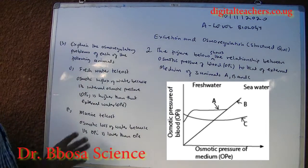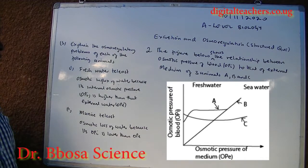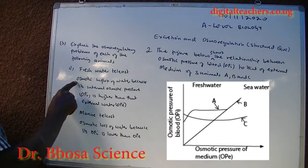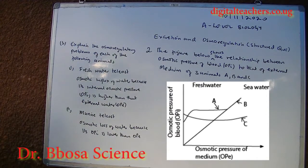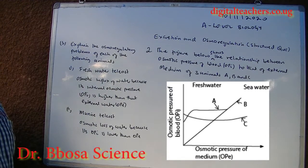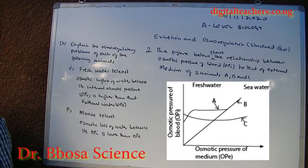Explain the osmotic problems of each of the following animals. Animal A, which lives in both fresh water and estuarine, faces a problem of osmotic efflux of water, because its internal osmotic pressure (OPI) is higher than the external water (OPE).